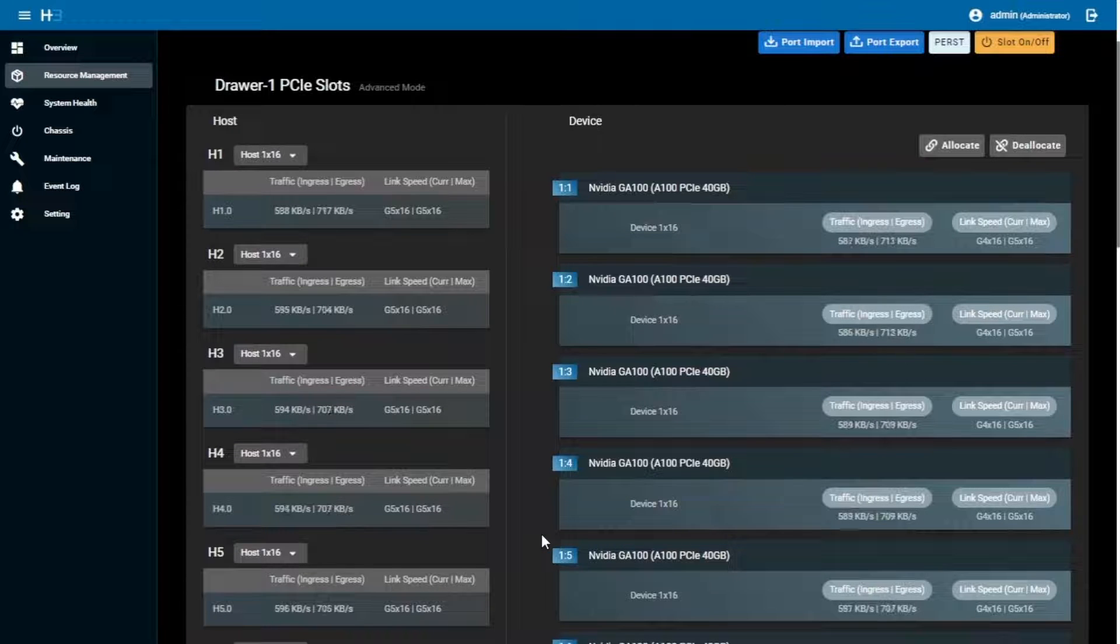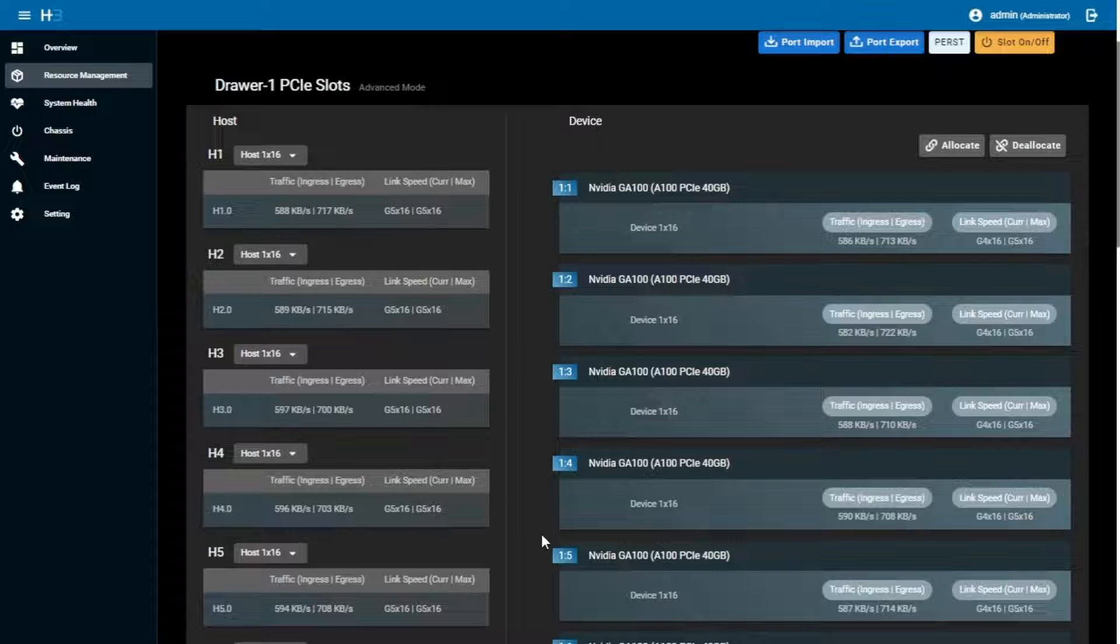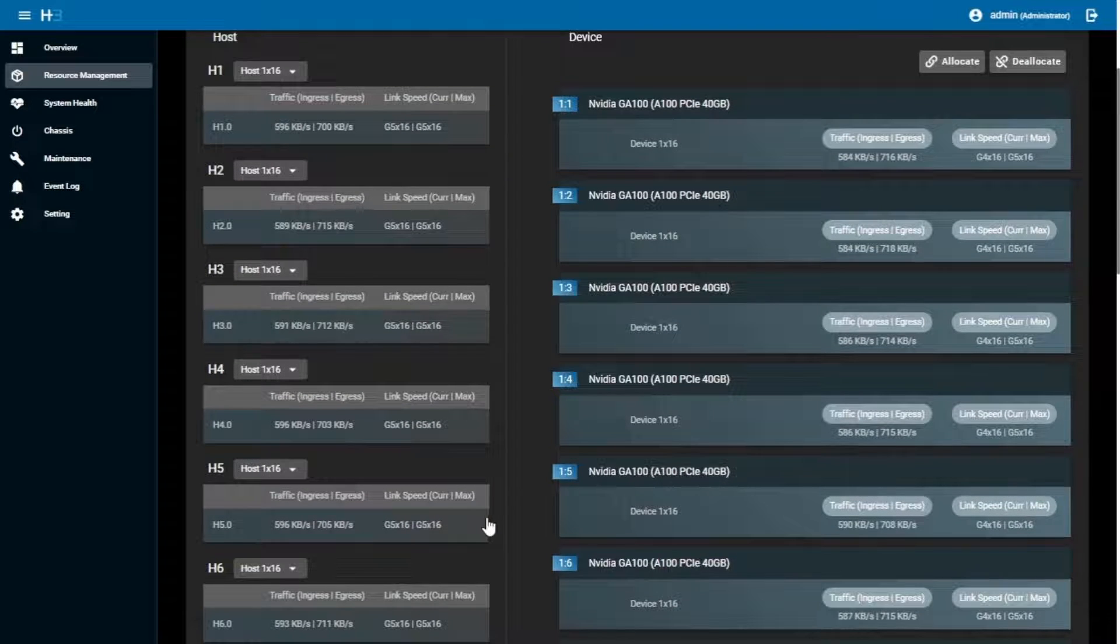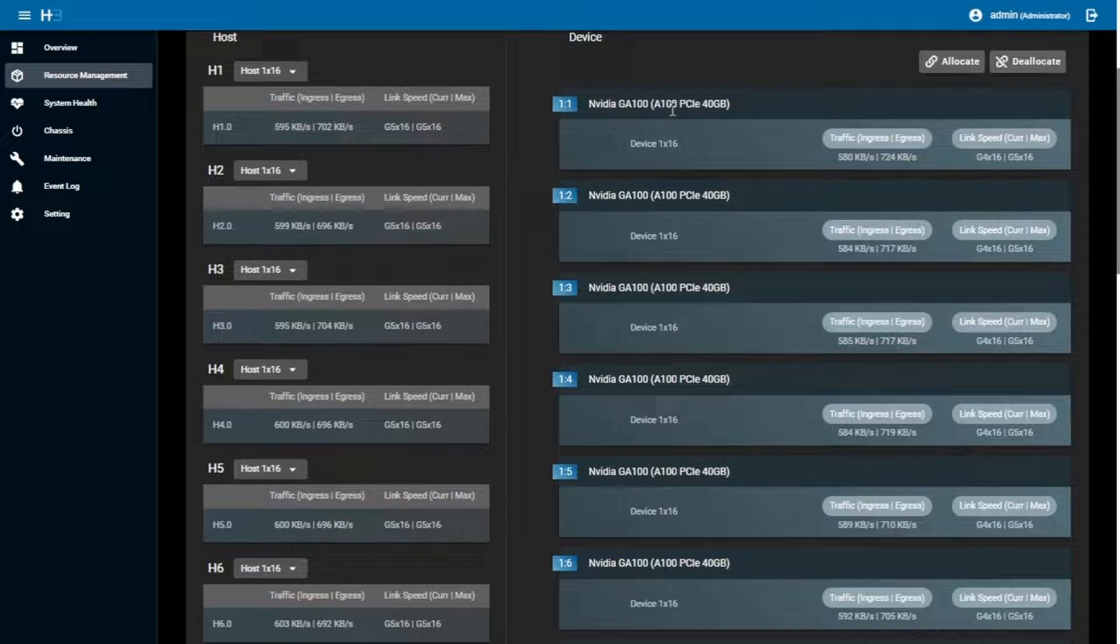Therefore, we can place eight hosts and eight devices connected with two switches in drawer one. Here we know that Gen5 switch 89144 has 9x16 stations. So we got eight stations for PCIe devices. Every host, I let its throughput up to by 16 compatibility here.